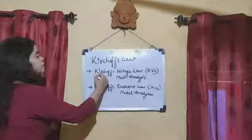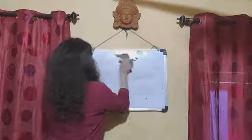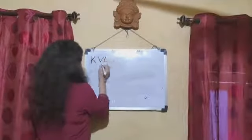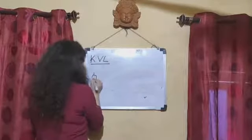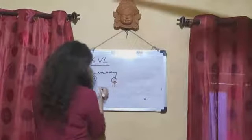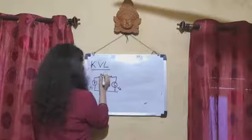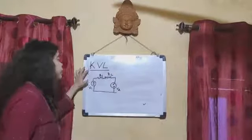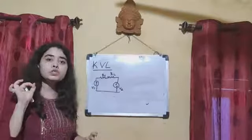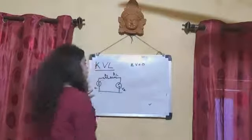Firstly we will discuss Kirchhoff's Voltage Law, that is KVL. We have a circuit diagram for KVL. We are taking two voltage sources, that is V1 and V2. KVL states that the algebraic sum of total voltage across this circuit is equal to zero. That is, in mathematical form, summation V is equal to zero.